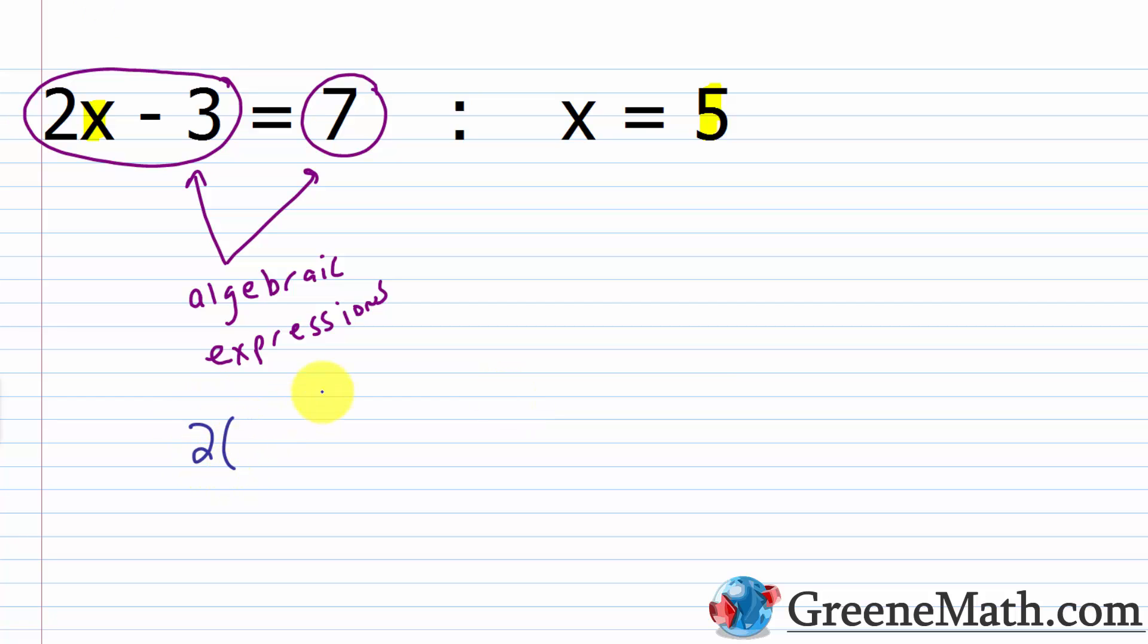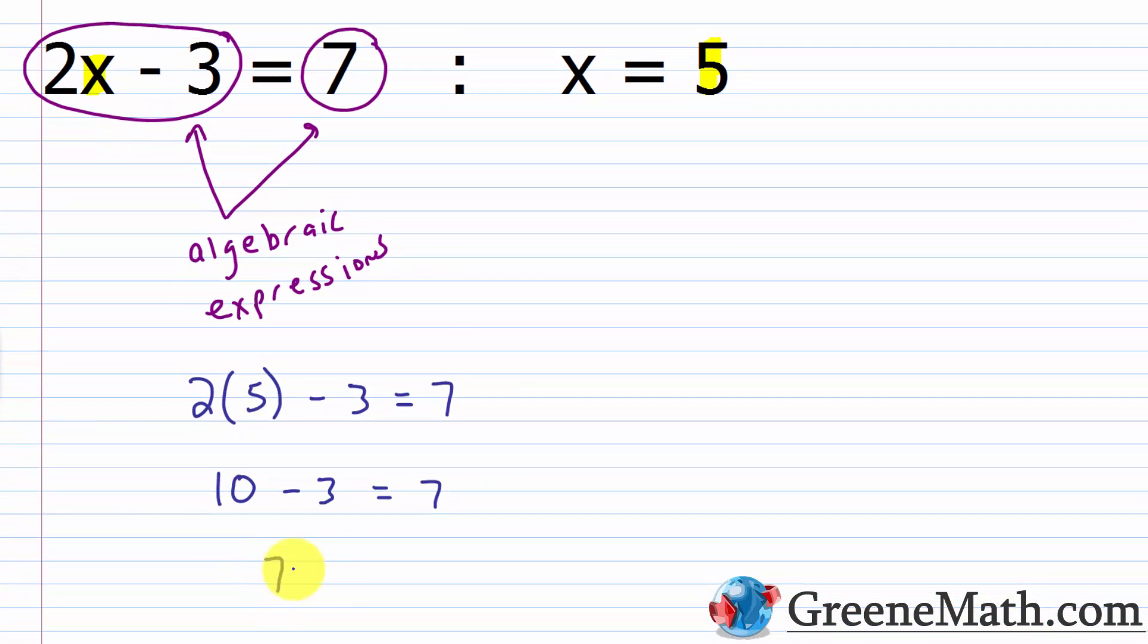So we have 2 multiplied by, plug in a 5 for x, then minus 3 equals 7. I would just simplify each side. 7 on the right, I can't do anything with that. On the left, 2 times 5 is 10. So you'd have 10 and then minus 3. 10 minus 3 is 7. So we would say 7 is equal to 7. And that's true. 7 is the same or is equal to 7. So this is a true statement.